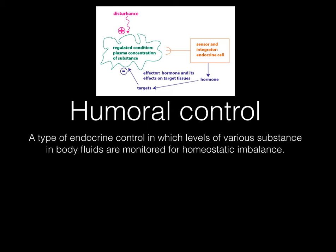Humoral control is a type of endocrine control in which levels of various substances and body fluids are monitored for homeostatic imbalance. This is going to be a negative feedback loop where if homeostasis is not maintained, it's going to send signals to regulate this imbalance and try to get us back into homeostasis.